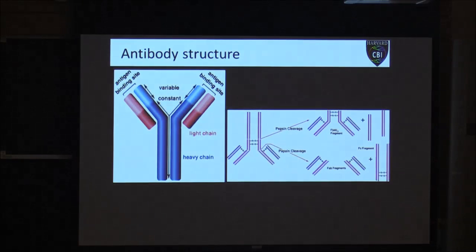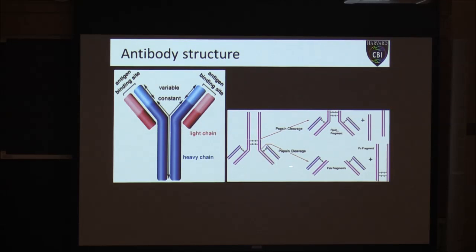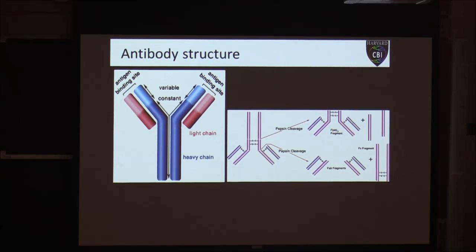I want to quickly point out some things we can do to these antibodies — we'll come back to this later. There are two cleavage sites for two enzymes: a pepsin cleavage site in the heavy chains and a papain cleavage site just before the disulfide bridge linking the heavy and light chains. This allows us to cut antibodies into smaller subunits — a Fab2 fragment after pepsin cleavage, and Fab fragments after papain cleavage.